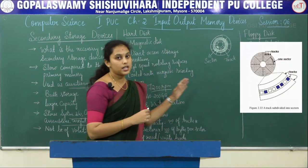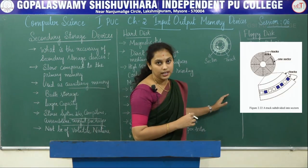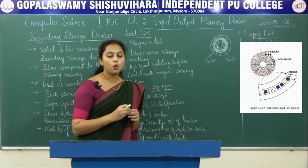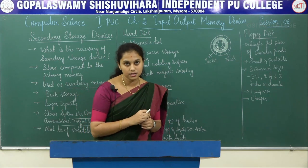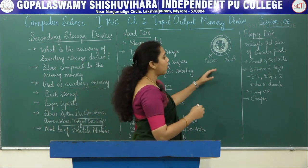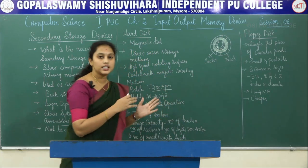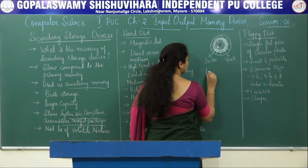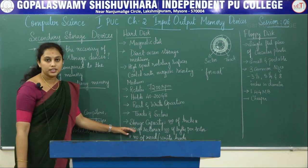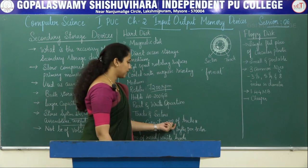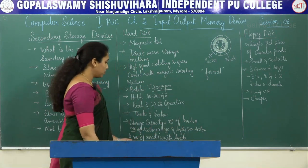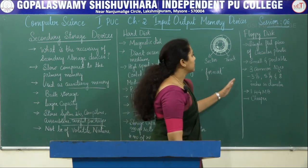Each circular disk is divided into tracks and sectors. Each track is divided into a number of sectors, and each sector holds a specific number of data elements. The smallest unit on which you can perform read or write operations on a disk is called a sector. The arrangement of tracks and sectors on the disk is called the format. The storage capacity of the disk is calculated using the formula: number of tracks × number of sectors × number of bytes per sector × number of read or write heads.